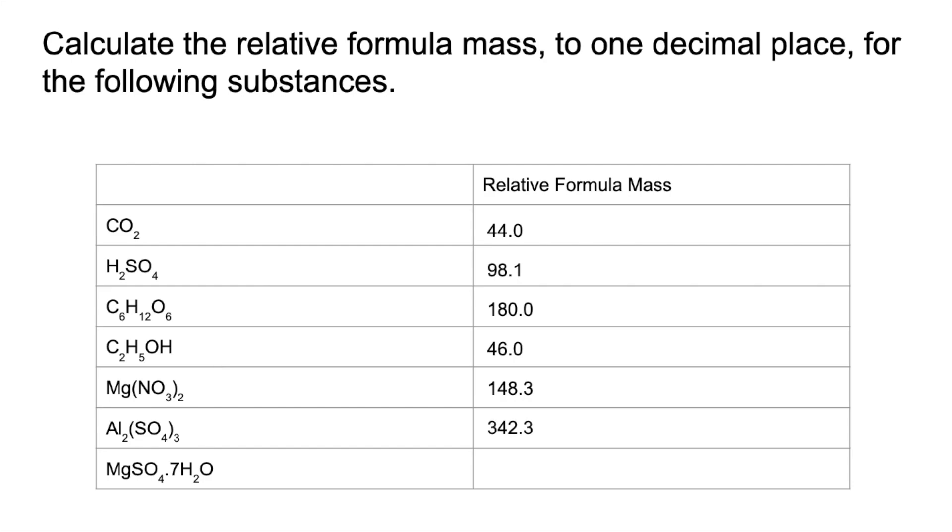And the last one, that's a hydrated salt, so we've got one magnesium, one sulfur, four oxygens in the MgSO4 part. So if you add those together, and then to that, you need to add seven waters. So that's seven times 18. So the total relative formula mass for that comes out at 246.4.